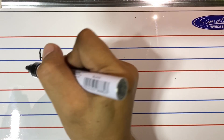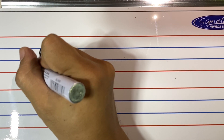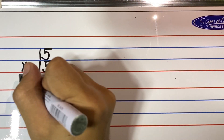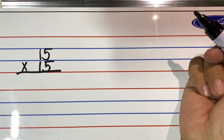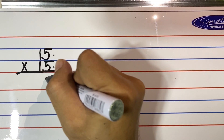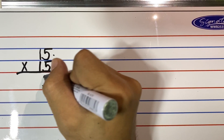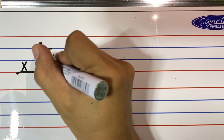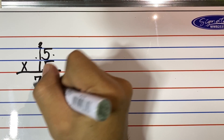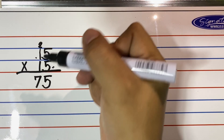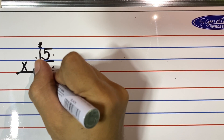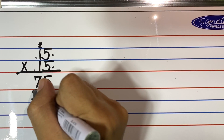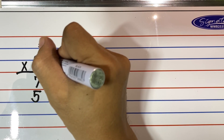Let's take 15 times 15. For the long method: 5 times 5 is 25 — write the partial product below the equal sign, write 5 and carry 2. Next, 5 times 1 is 5, plus 2 equals 7. The partial product is 75. For the next partial product, 1 times 5 is 5, then 1 times 1 is 1.